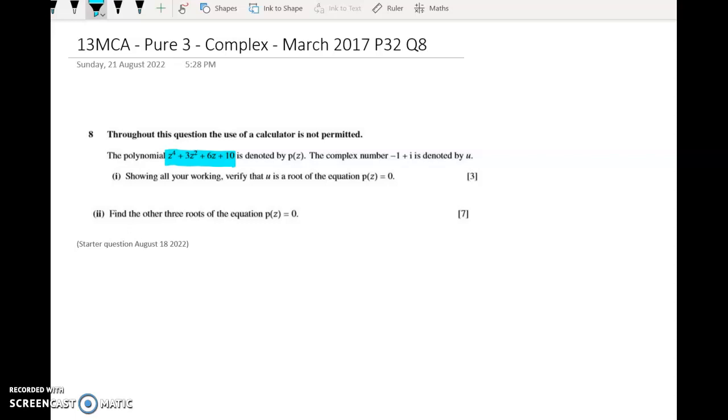So here the polynomial is of degree 4. So we've got z to the power of 4 plus a whole bunch of stuff and we're told that u is negative 1 plus i and we have to show all our working to show that u is a root of that equation. That's really important that you are thorough with how you show your working here.